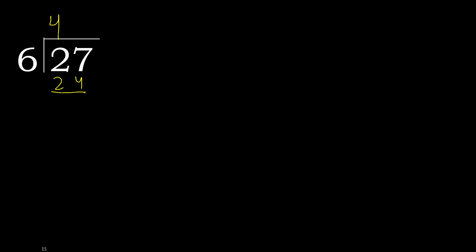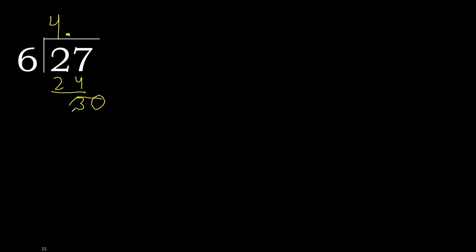27 minus 24 is 3. Next, there is no more number, therefore complete. Always complete with 0. Point. 0. Point. Complete 0. Point, 30.